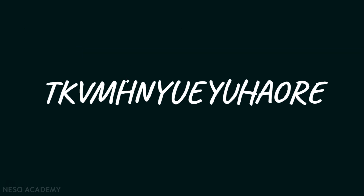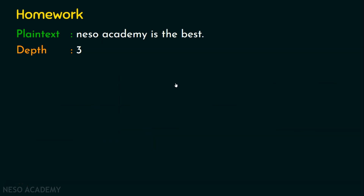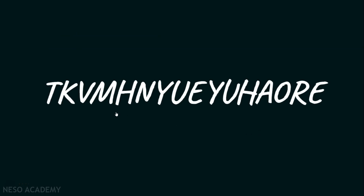You can easily do it. Is anything weird on this last slide? Nothing is weird — let me decipher it. I have said 'thank you very much,' but I have not presented it as plain text. Rather, I presented it as ciphertext. I used the rail fence technique with depth value 3 to generate it. The plaintext is 'Thank you very much.' Take this as a clue to solve the homework problem and don't forget to post your answers in the comment section. I hope you enjoyed this presentation — thank you very much.